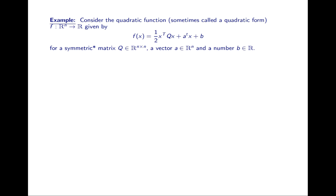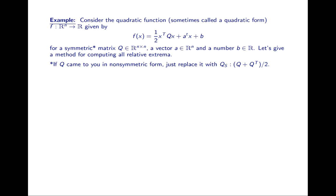How is this useful? Consider a quadratic form — sometimes called a quadratic form and the subject of quadratic programming — where we optimize functions with quadratic structure. Suppose we're given f(x) = ½xᵀQx + aᵀx + b, where Q is a symmetric matrix, b is a scalar, and a is a vector in Rn. If Q comes to you in non-symmetric form, just replace Q with its symmetric part — you'll get the same function.